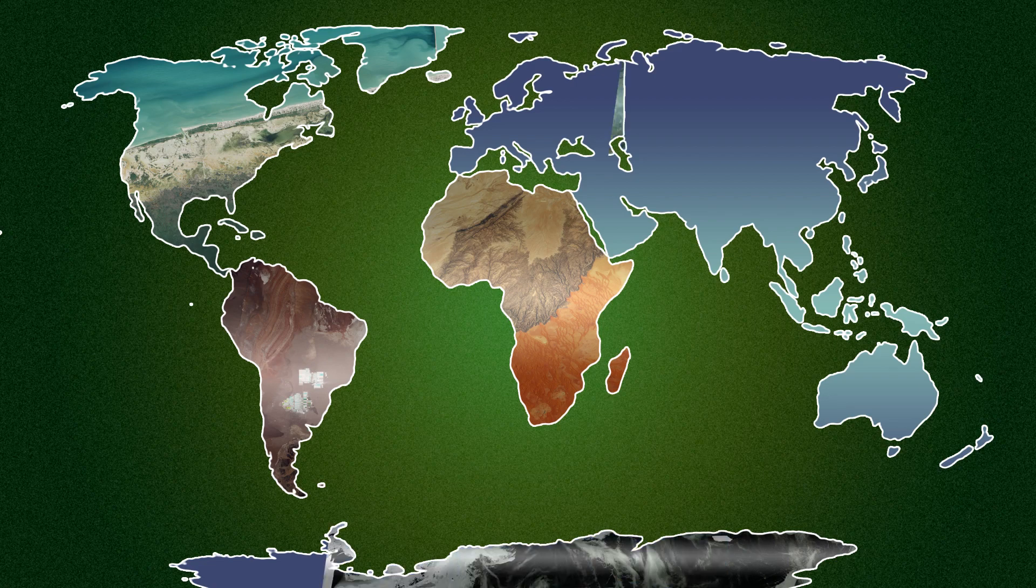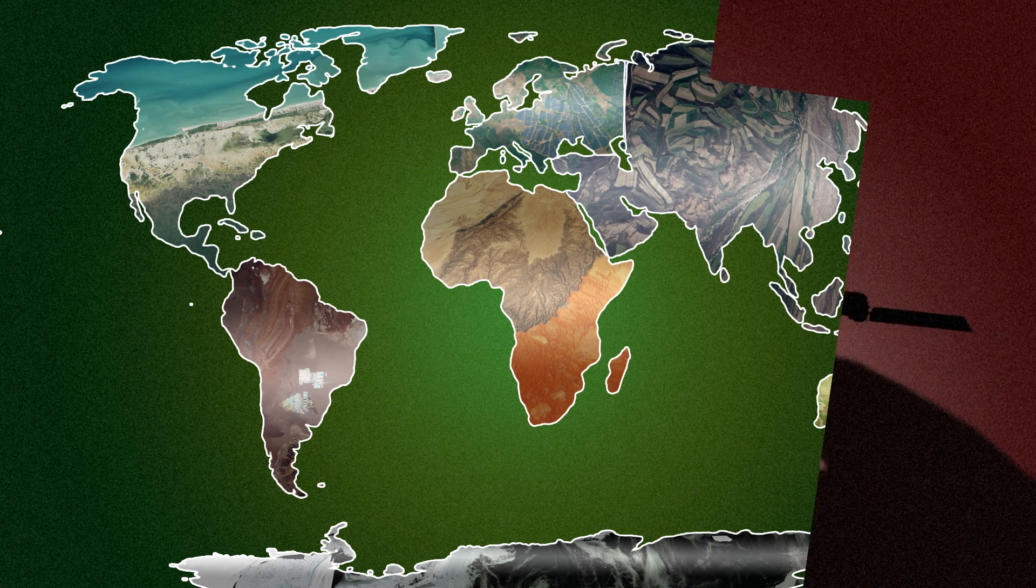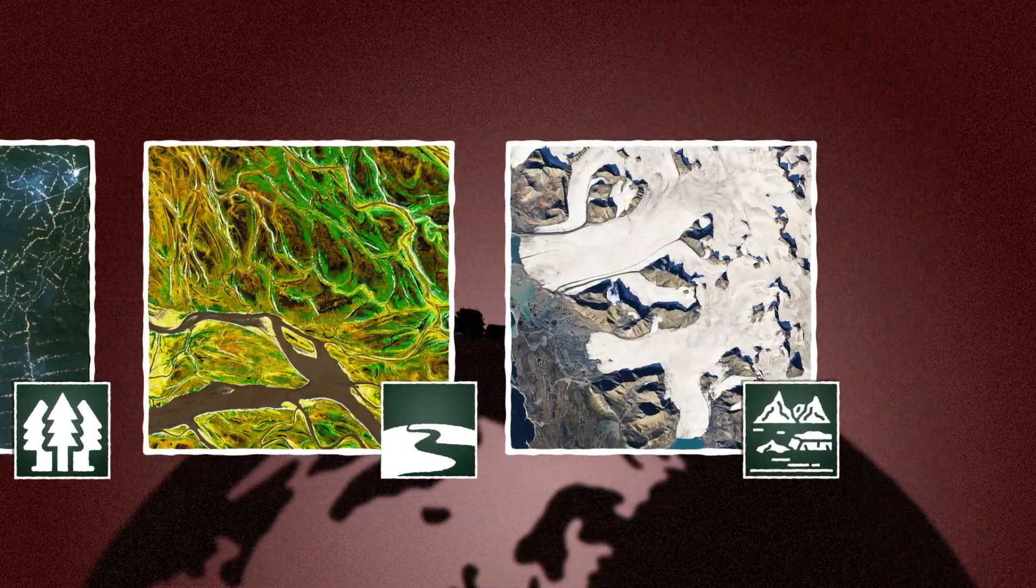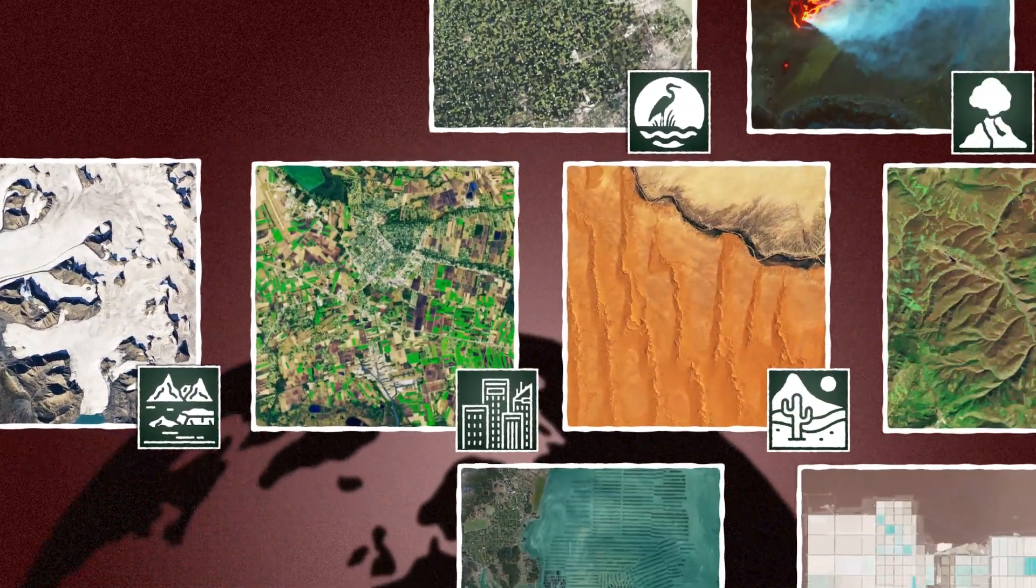Landsat collects images of each of our planet's seven continents. Farms, forests, waterways, glaciers, urban areas. Landsat sees it all.